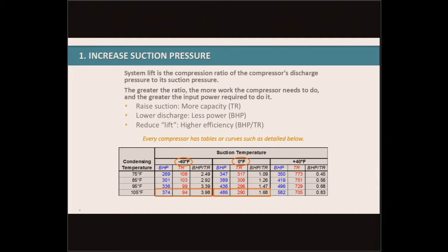If we're able to increase that suction pressure — and this is an extreme example going from a minus 40 to a zero degree suction, but the idea holds true incrementally — in this situation, from minus 40 to zero, our brake horsepower goes from 374 to 486. You might think our brake horsepower just went up, but the key is to look at the tons as well. Our tons of refrigeration went from 94 to 290, and our overall efficiency went from 3.98 to 1.68 brake horsepower per ton. So our efficiency vastly improved — we're getting a lot more refrigeration effect out of that compressor for less horsepower.